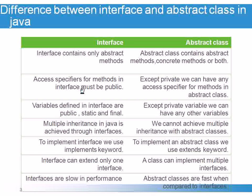Third difference: In an interface, the variables defined are public, static, and final by default. In an abstract class, except private variables, we can have any other variables.